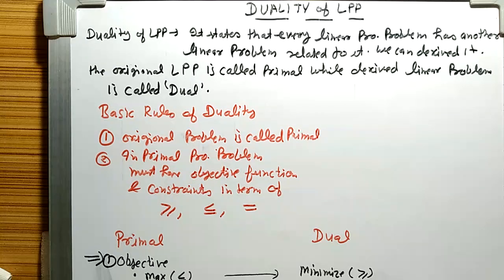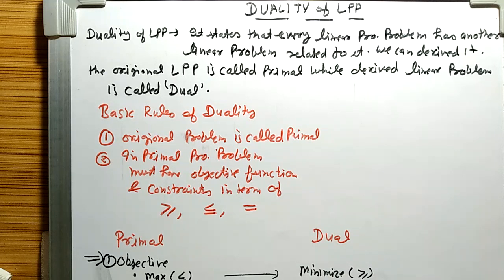Linear programming problem is a scientific approach, a scientific method in which we can use limited resources. Limited resources include man, material, machine, and time, and we can utilize them optimally so that we can achieve the optimum profit.